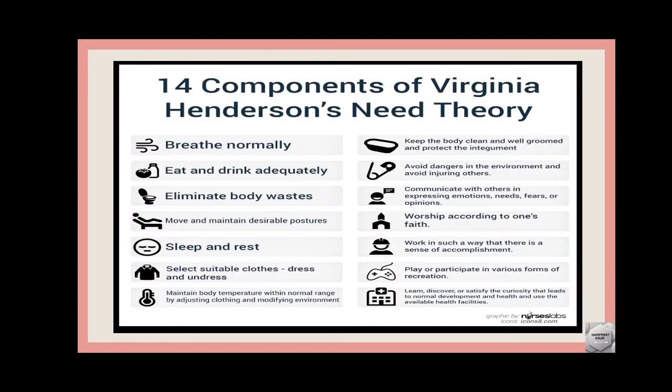We are going to talk about the 14 components of Virginia Henderson's Need Theory. Virginia ne 14 components bataye hain need theory mein. Ye jo screen pe aapko dikh rha hai, aapne as it is line-wise hi likh leni hai. Sabse pehle kya bataya hai ki person ki kya need hoti hai — breathe normally.